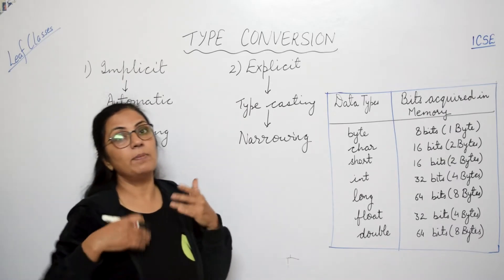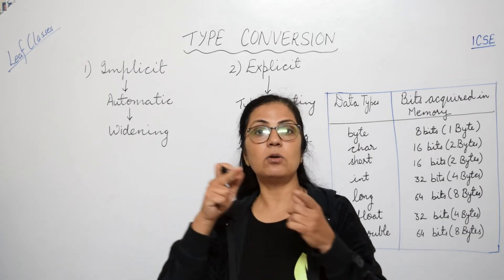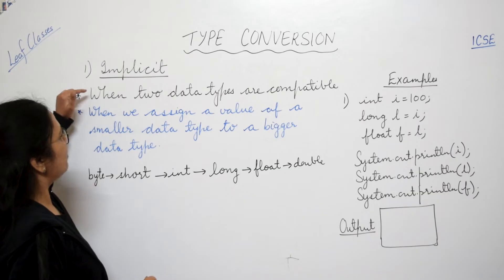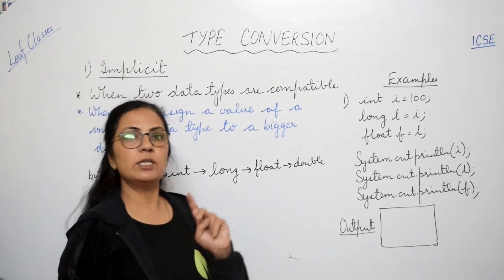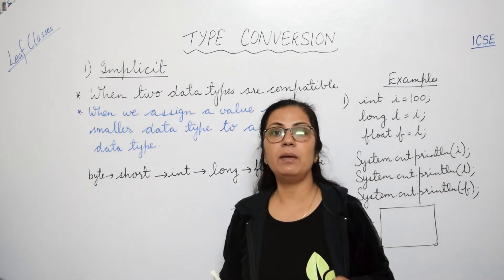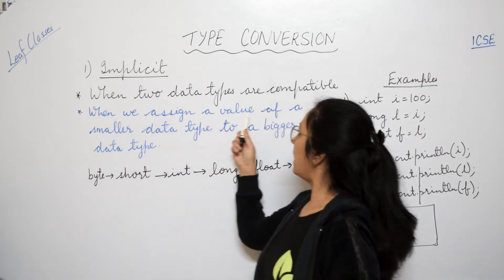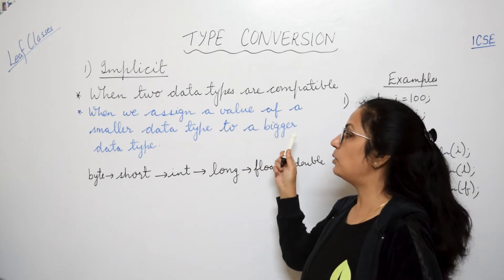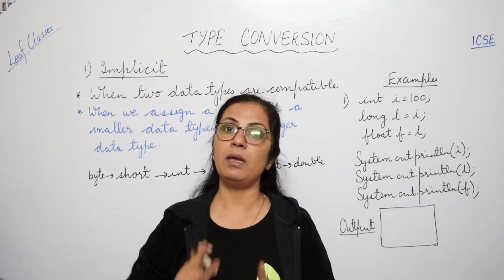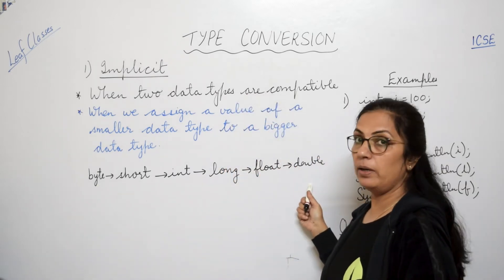Automatic means automatically it is done without the intervention of the user. Smaller data type ki value, agar hum bigger data type mein assign karte hain, tabhi implicit conversion possible hai. And for this, always keep this rule in your mind.